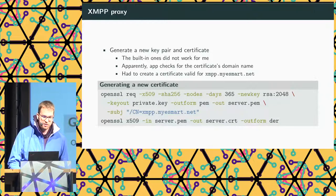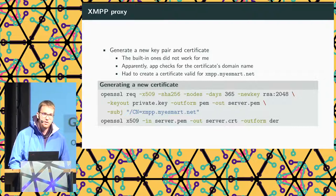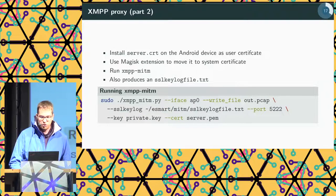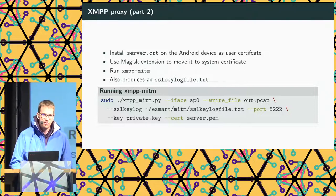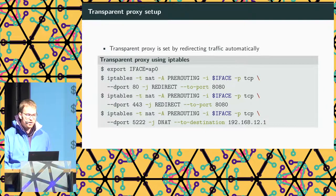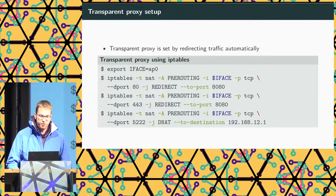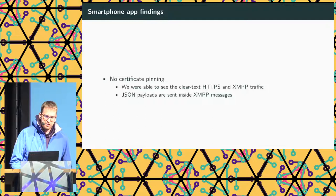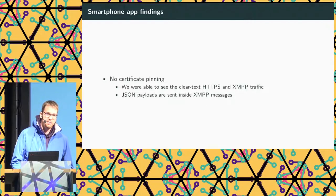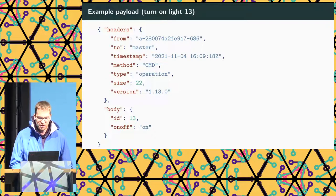For the XMPP proxy, it was very similar, except the app was checking the domain name in the certificate, so I had to generate one with the domain xmpp.milesmart.net. Same approach — save TLS handshakes to an SSL keylog file, decrypt in Wireshark, and redirect traffic using iptables. In the end, we could see the traffic in the clear. The app was not doing any certificate pinning, and inside the XMPP messages, JSON payloads were sent.